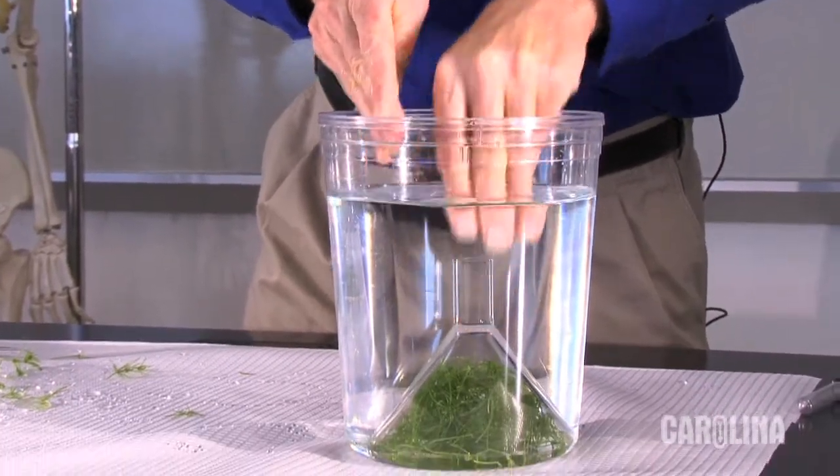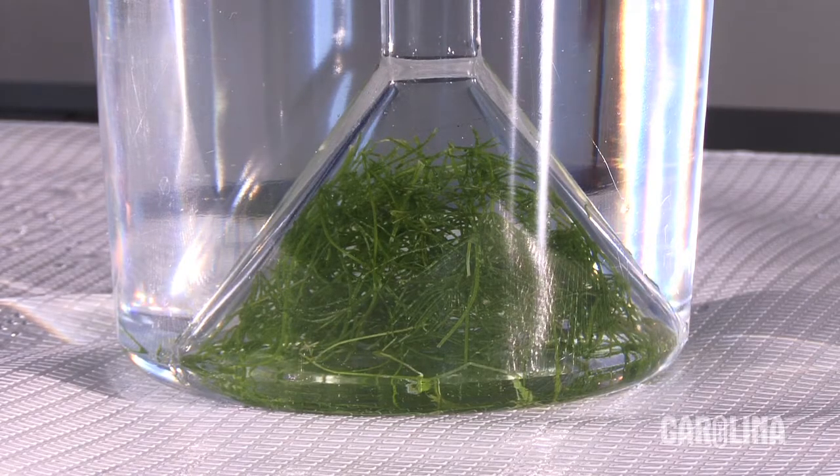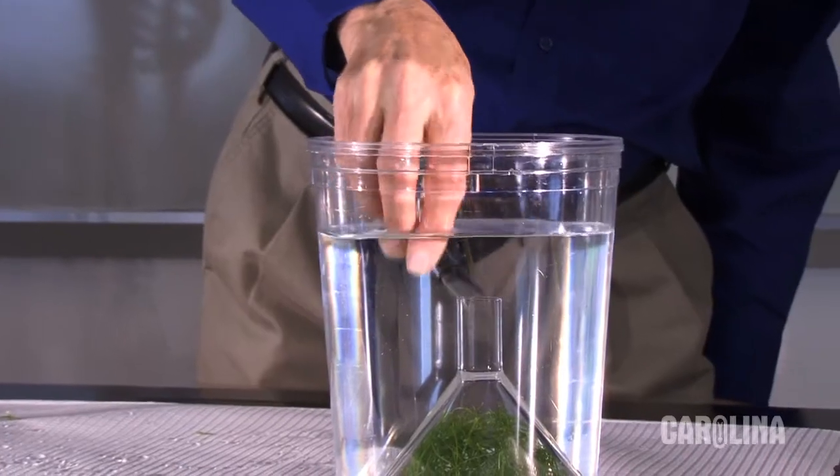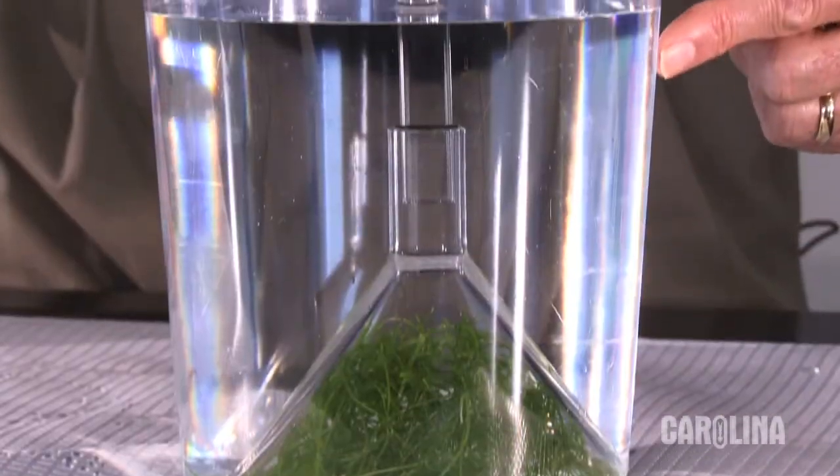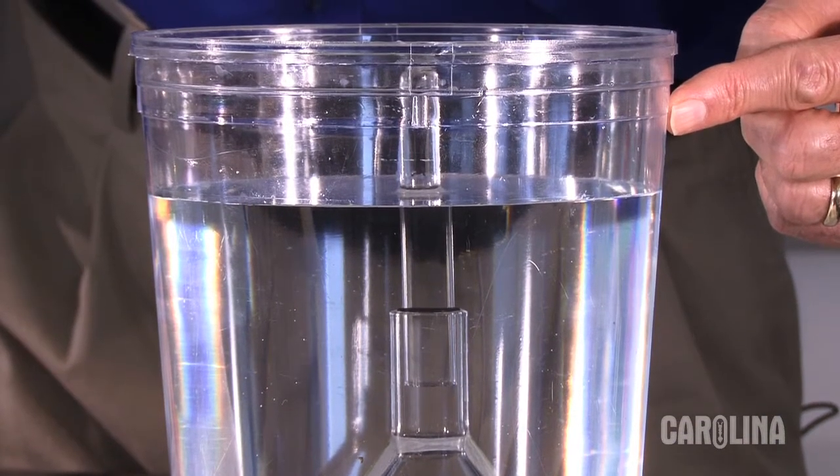And the funnel goes into the water like this. Fill the test tube with water and upend it over the funnel. Oxygen produced by the plants will enter the test tube and displace the water.